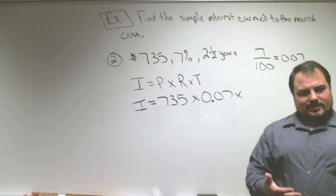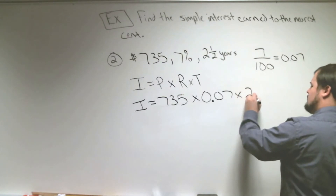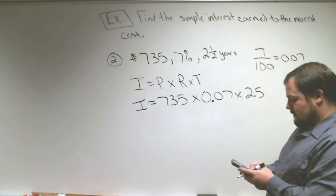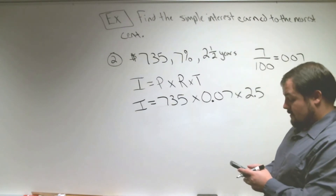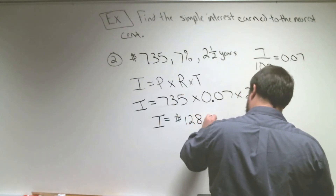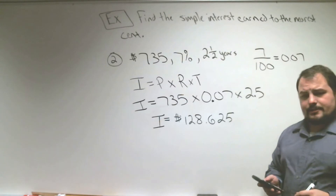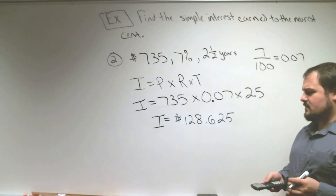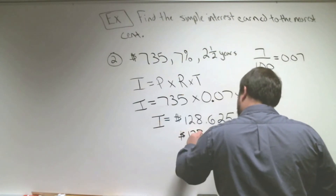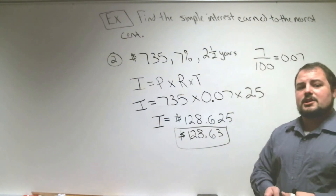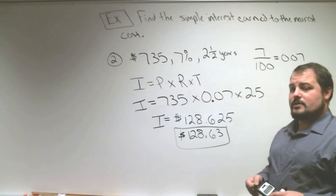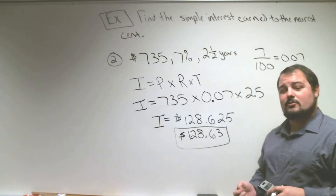Two and a half is a bit tricky to enter in the calculator, so we change one half to a decimal: two and a half years is 2.5 years. So we multiply by 2.5. Using the calculator: 735 times 0.07 times 2.5. The calculator shows $128.62 with a 5 after it, which rounds that 2 up to a 3, so the amount of interest we're going to make is $128.63. If we put $735 in at 7% interest and leave it in for two and a half years, the bank is going to pay us $128.63.